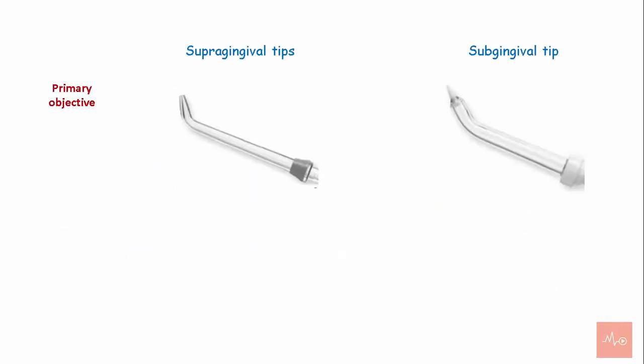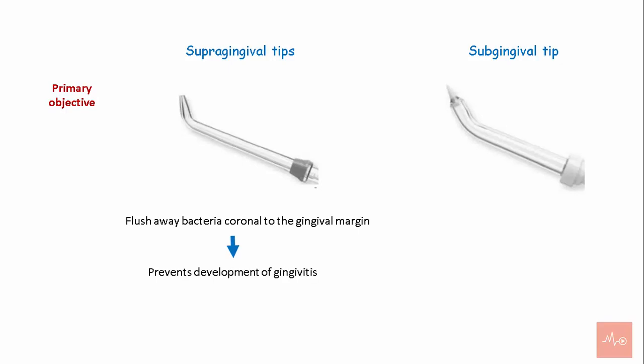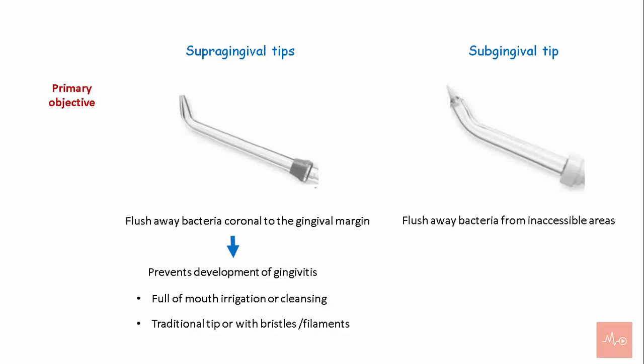The primary objective of supragingival irrigation is to flush away bacteria coronal to the gingival margin, thereby diminishing the potential of developing gingivitis or decreasing gingival inflammation. Supragingival tips are recommended for full mouth irrigation or cleansing, and are available as traditional jet tips as well as tips enhanced with bristles or filaments for biofilm removal. Subgingival tips are used to flush away bacteria from inaccessible areas, and are recommended after full mouth cleaning for localized cleaning of deep pockets, furcation, implants, and crown and bridge.